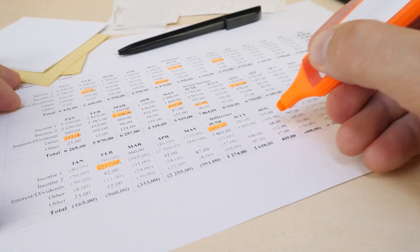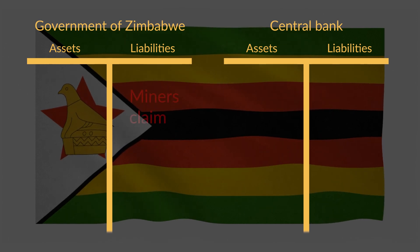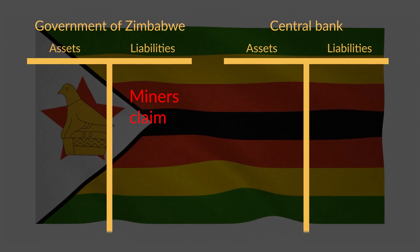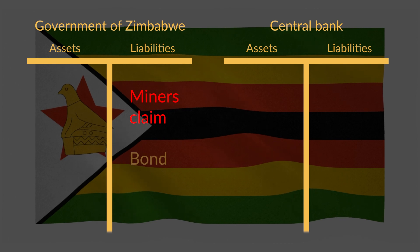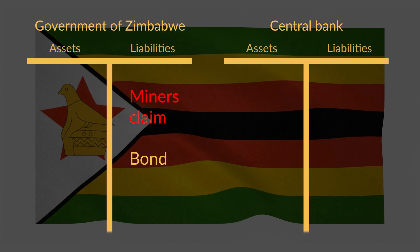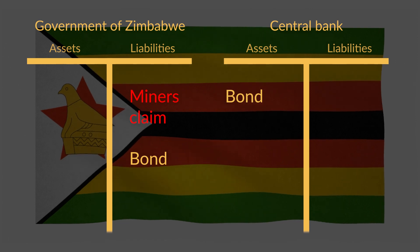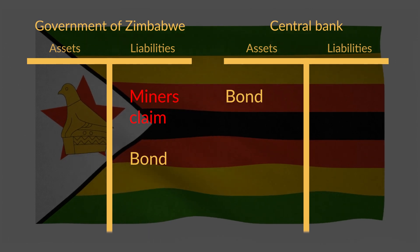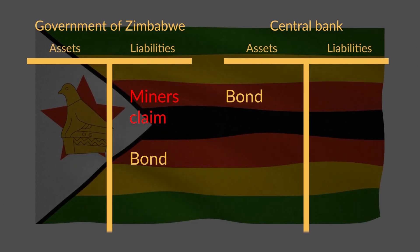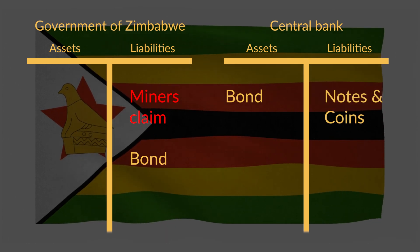There were five steps to this process. We started out with the situation in which the government wanted to get rid of the liability — the promised subsidy to the gold mines — and replace it with money. The first step was for the government to issue another liability: a bond. Then, in step 2, it gave that bond to the central bank, so that bond appeared on the asset side of the central bank, which then owned a claim on the government. In step 3, the central bank printed enough banknotes and coins to exchange for the bond and gave that to the government.